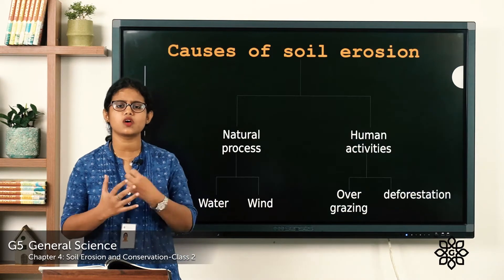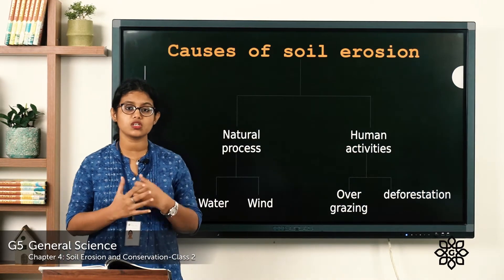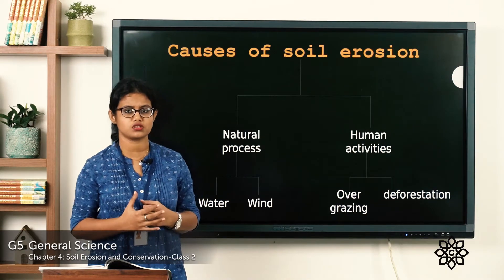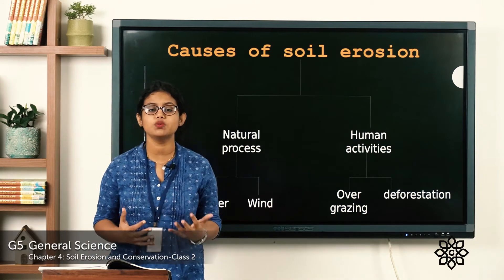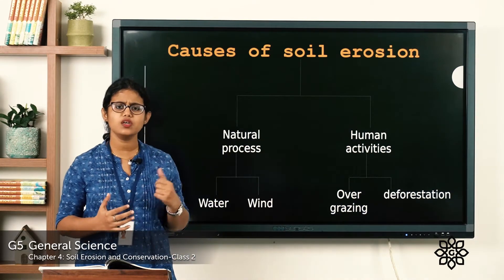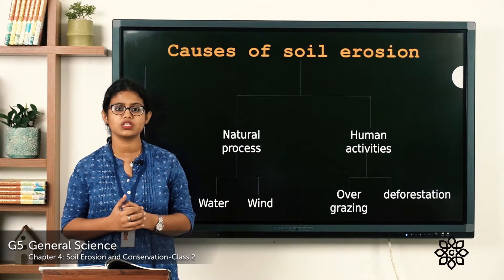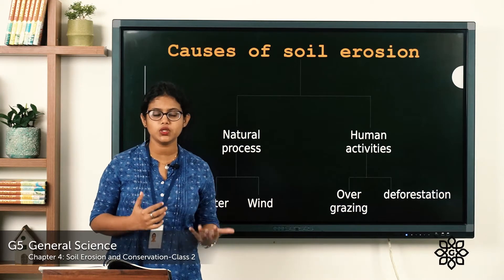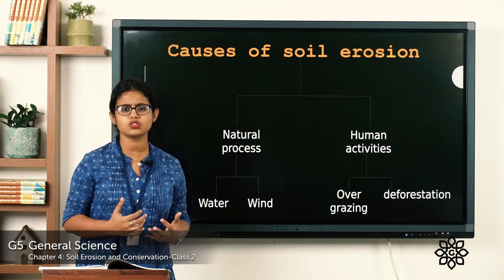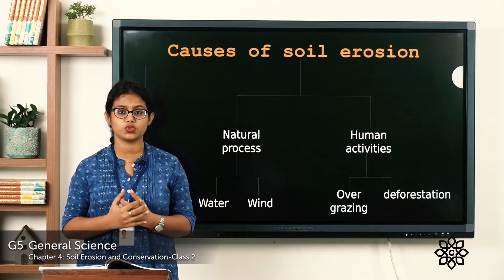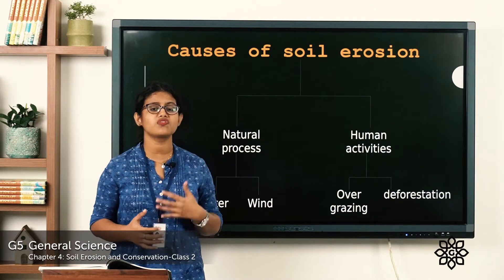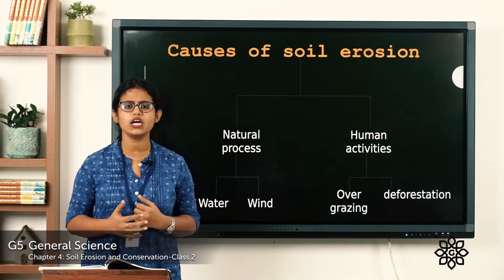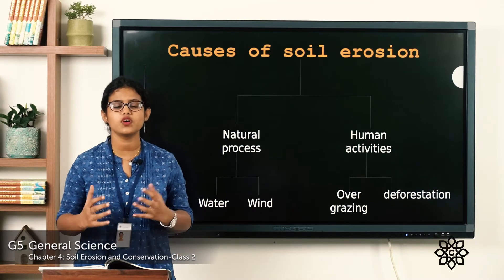So what are the causes of soil erosion? It can happen due to natural processes or due to human activities. The natural causes include water and wind, while human activities such as deforestation and overgrazing also cause soil erosion.